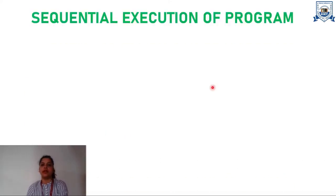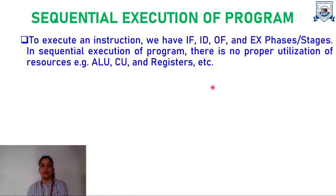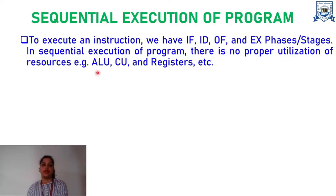Now, let's try to understand sequential execution of a program. To execute an instruction, we need to have instruction fetching, instruction decoding, operand fetching, and the execution of the instruction phases. In sequential execution of a program, there is no proper utilization of the resources like ALU, CU, and the registers.